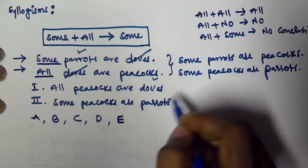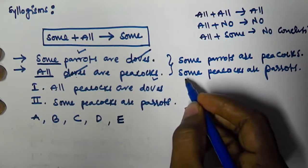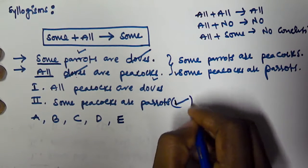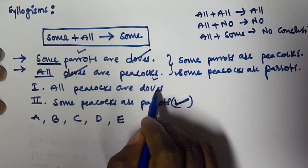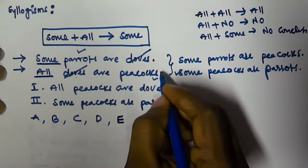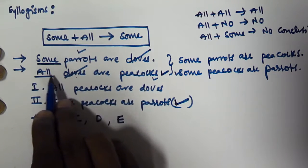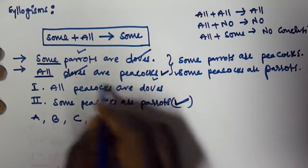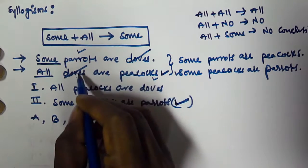Now check if any of the given conclusions match the derived ones. Some peacocks are parrots — the second conclusion matches exactly, so the second conclusion is true. As for the first conclusion, all peacocks are dogs: the second statement given is all dogs are peacocks, not all peacocks are dogs.